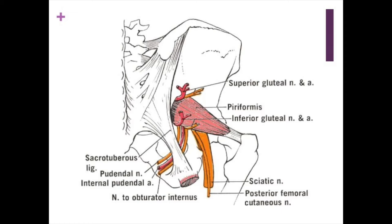Here's an image where the piriformis is coming out of the greater sciatic notch. The sacrospinous ligament has been cut and the sacrotuberous ligament is intact, but the pudendal nerve, internal pudendal artery, and the nerve to obturator internus all loop out over that sacrospinous ligament — hence why they come out through the greater sciatic notch but come back in through the lesser.